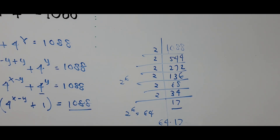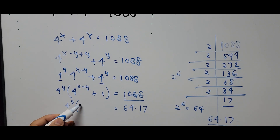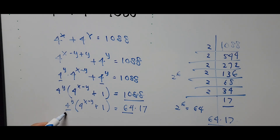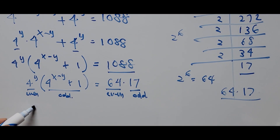So 1088 equals 64 times 17. Substituting back into the equation, the right side is now 64 times 17. On the left side, 4 to the power of Y is even and 64 is even, so they match. Meanwhile, the factor (4 raised to the power of X minus Y plus 1) is odd, and this corresponds to 17, which is odd.